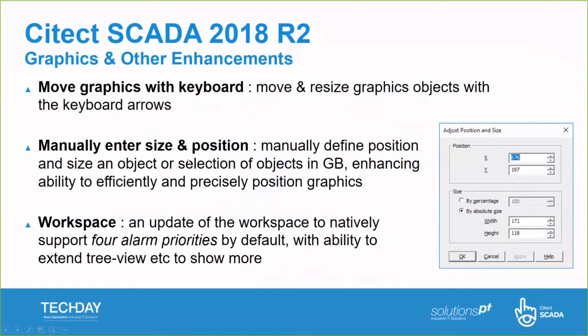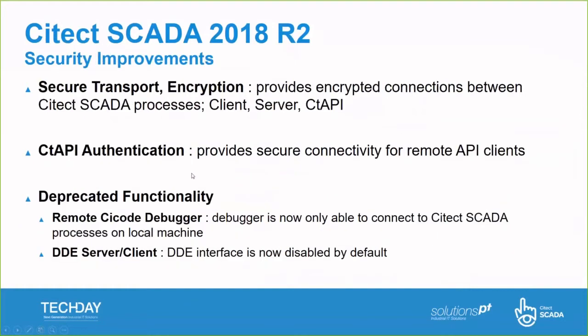Additional features include the ability to move graphics with keyboard arrow keys — something that has been requested for a while — as well as being able to manually enter the size and position of graphics, helping you to precisely position graphic symbols. Security improvements have been made in the R2 release: communication between server and client is now encrypted, CT API authentication provides much more secure connectivity for remote clients, and some functionality has been deprecated in order to make CITECT more secure.